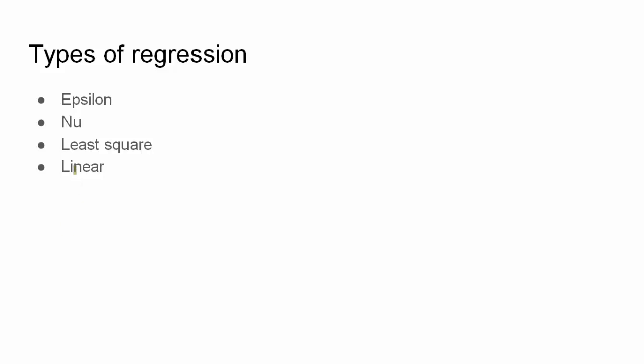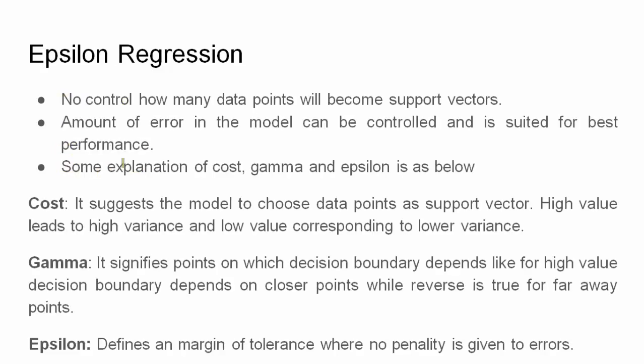The first one is epsilon, then nu, then least square, and then linear. Now going to epsilon. The theory of this regression is very important because you will learn many terms like cost, gamma, and epsilon, which will make your concepts very strong. When you do tuning of parameters, you will definitely learn great points from this video.